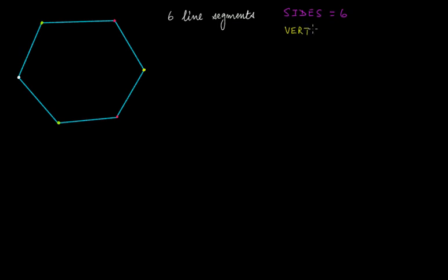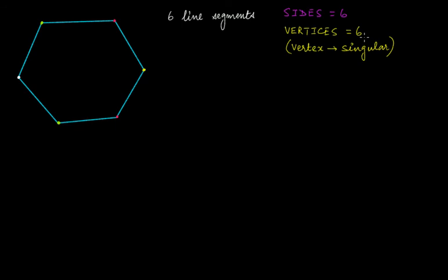Vertices is plural; vertex is singular. So this will be one vertex, this will be a second vertex, and if we count the total number of vertices — one, two, three, four, five, six — we have a total of six vertices.